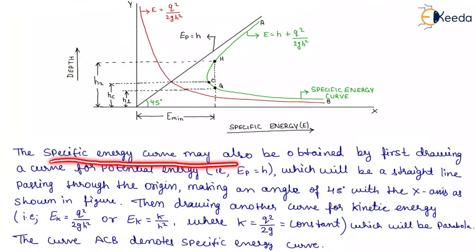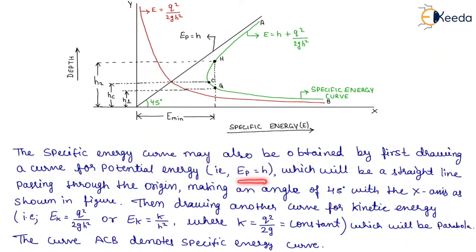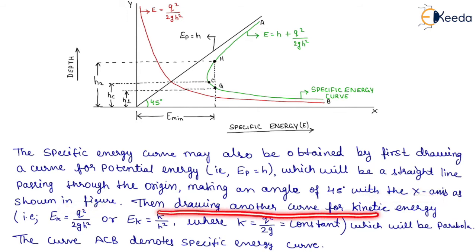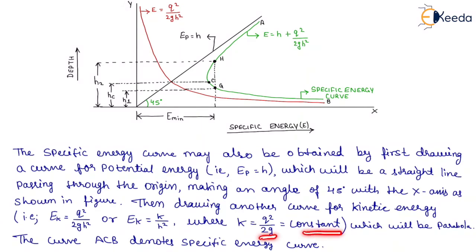The specific energy curve may also be obtained by first drawing a curve for potential energy EP equals H, which is a straight line passing through the origin making an angle of 45 degrees with the X-axis. Then drawing another curve for kinetic energy EK equals q² upon 2GH², or EK equals K upon H² where K equals q² upon 2G is a constant, which is a parabola. The curve ACB denotes the specific energy curve.